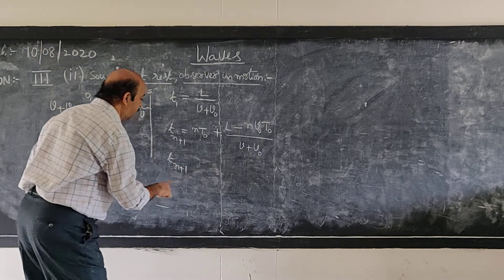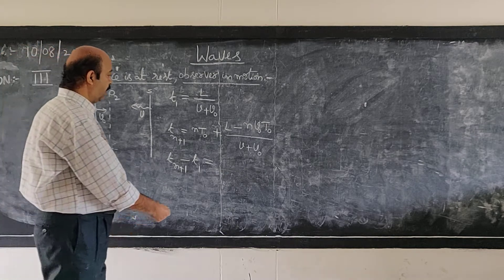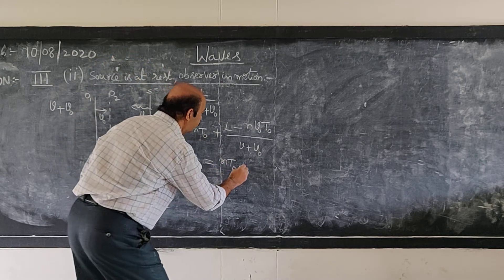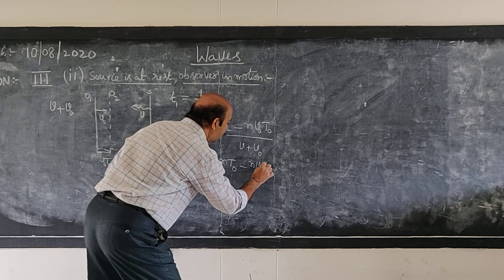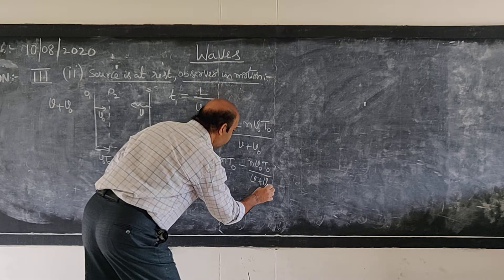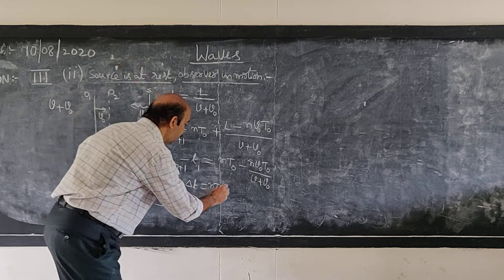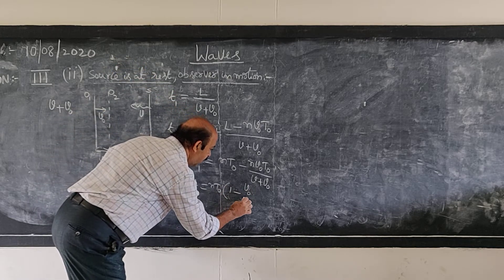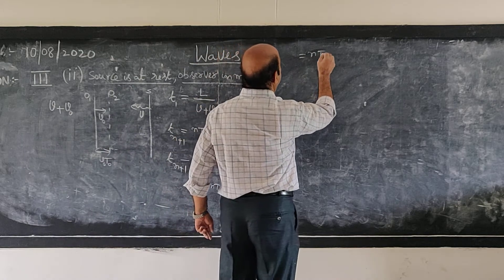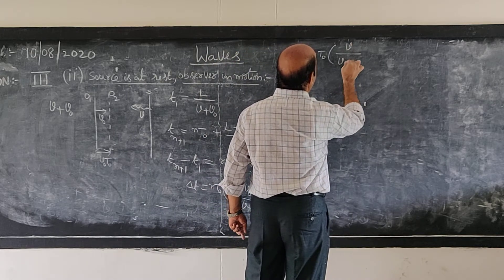The time interval between the (N+1)th crest and the first crest is the time taken for N waves to reach the observer — the difference of these two expressions. The L/(V+V0) terms cancel. What remains is N·V0·T0 divided by V plus V0. Taking N·V0 common, delta T equals N·V0 times (1 minus V0 by V plus V0), which simplifies to N·V0 times V by V plus V0.